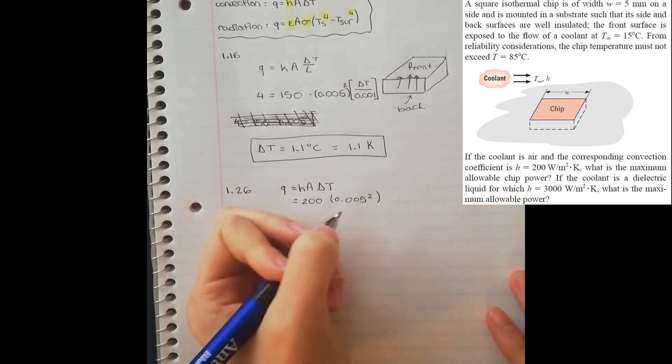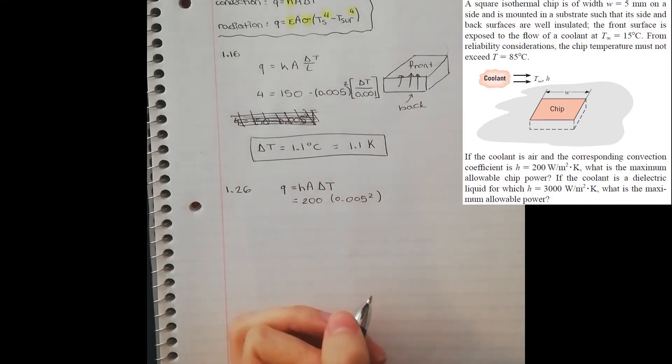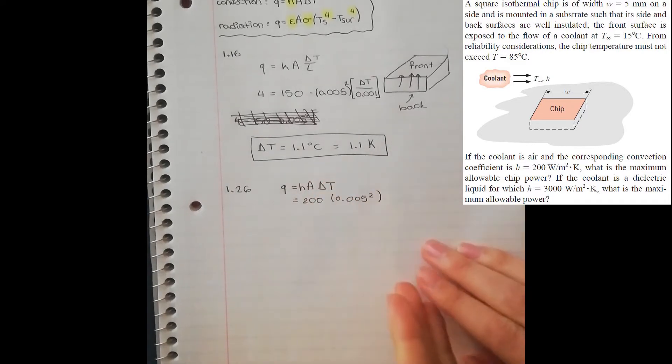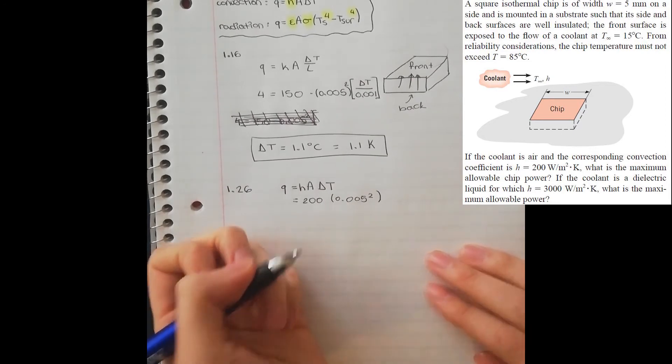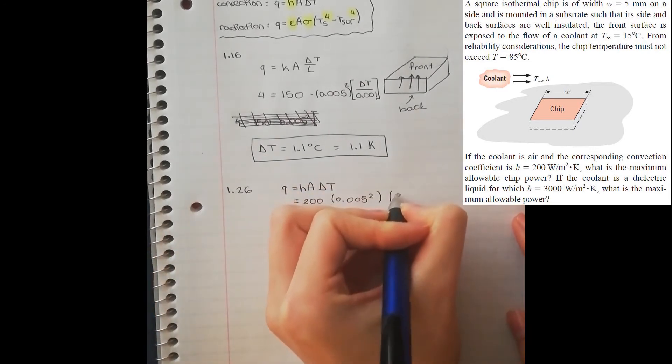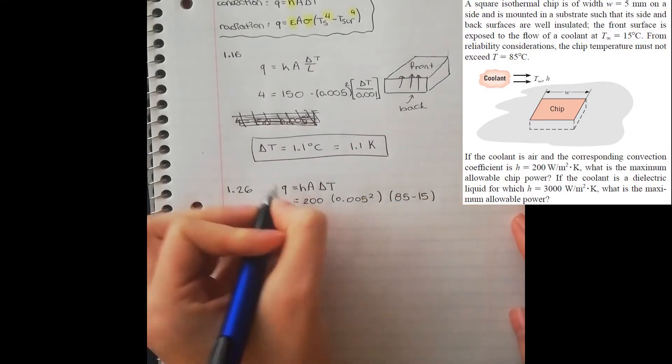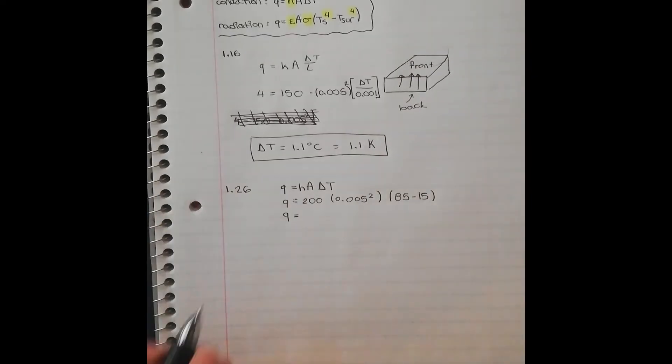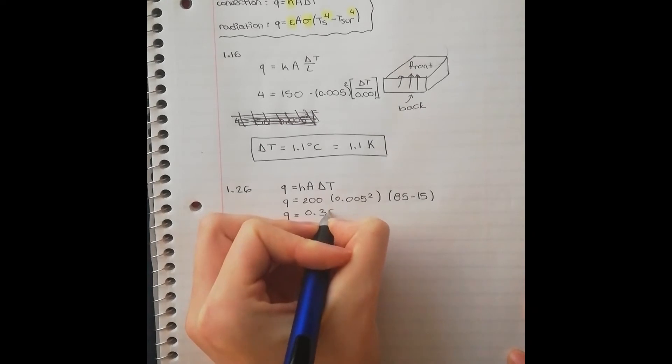For the temperature, we are told that the temperature of the chip cannot exceed 85 degrees Celsius. So that means that the hottest we can possibly be at is 85 Celsius, and then we must dissipate a lot of energy to the coolant, which is going to have a lower temperature of 15 Celsius. So this is our expression, and we are now ready to solve for Q. If you solve this equation, you'll find out that the maximum allowable chip power is 0.35 watts.